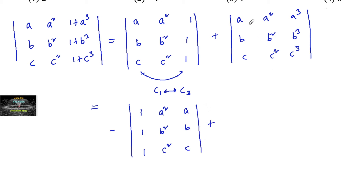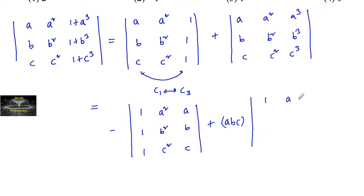In the second determinant, we take out a common factor from each row: factor a from row 1, factor b from row 2, and factor c from row 3. So we take out abc, leaving the determinant with rows (1, a, a²), (1, b, b²), (1, c, c²).